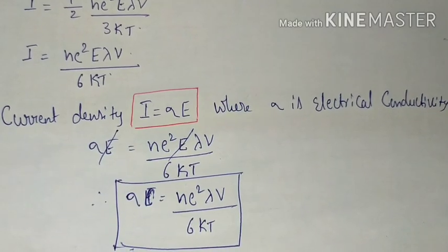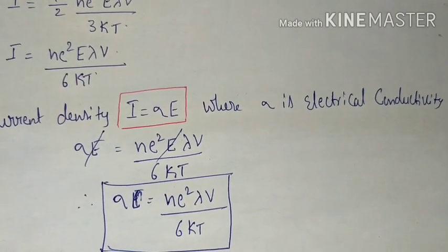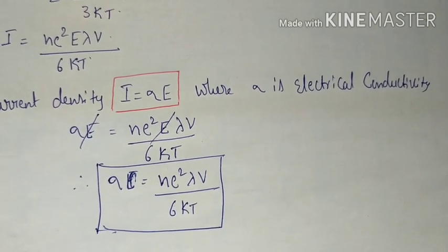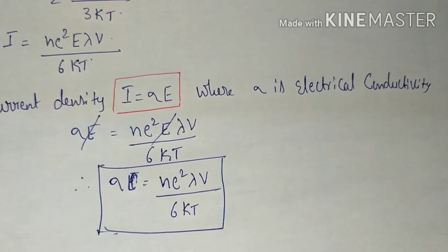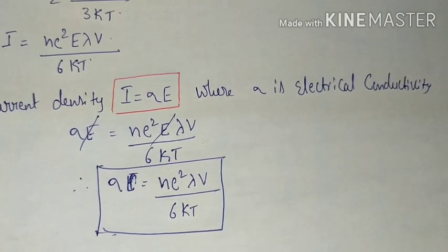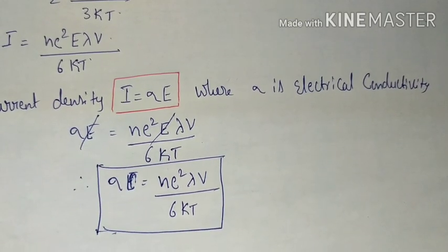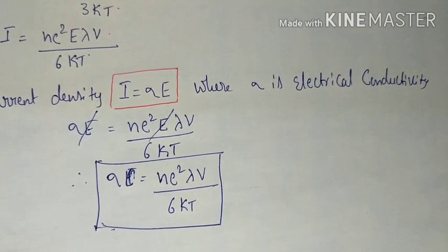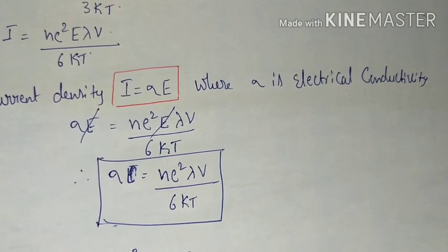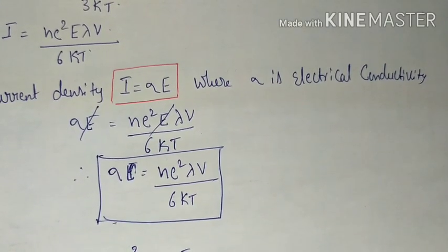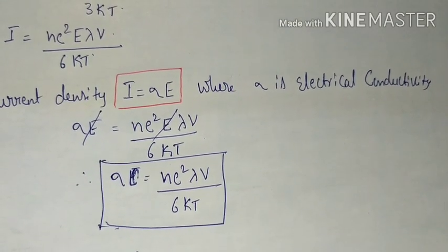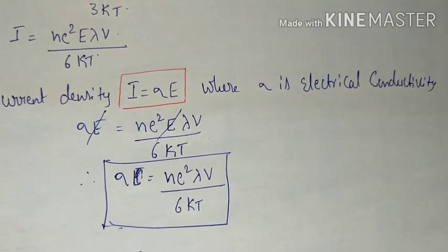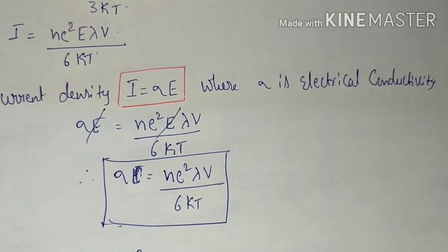Taking current density i = sigma·E, where sigma is the electrical conductivity, we substitute: sigma·E = n·e²·E·lambda·v / (6kT). Cancelling capital E from both sides, we obtain the expression for electrical conductivity as sigma = n·e²·lambda·v / (6kT). This is the final expression for electrical conductivity.